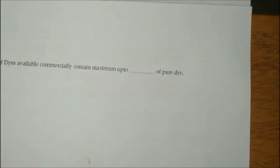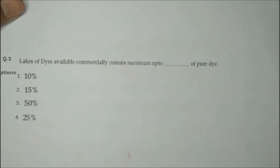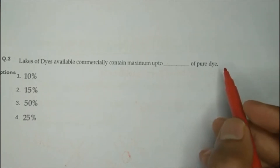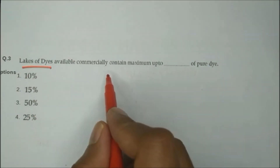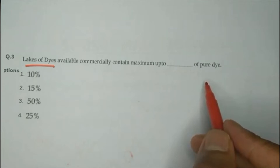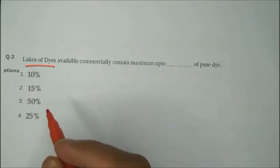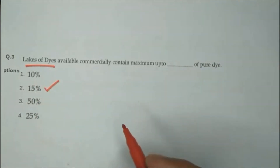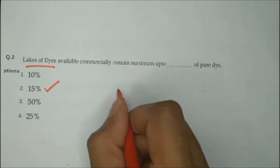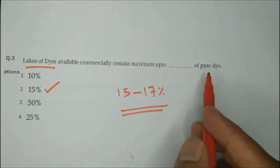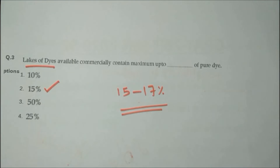Question number three: Lakes of dyes available commercially contain maximum up to what percentage of pure dye? Options are 10%, 15%, 50%, 25%. The correct answer is 15%. Lakes are available in low dye concentration, generally containing 15 to 17% pure dye — lake dye is a low dye concentration type.